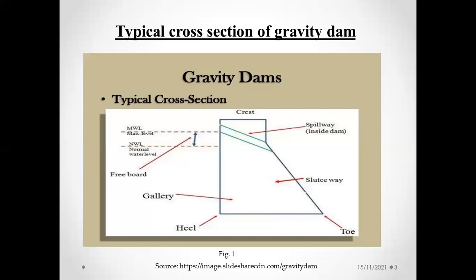There is a term called gallery. The function of the gallery is that sometimes there is seepage from the side of the dam and the foundation. The drainage gallery collects the seepage water and drains it out. There is a pipe connected from the drainage gallery to the foundation. Water seeping from the foundation is collected and drained out through another pipe to the tail side. The main concern is to drain out the water either from the side or from the foundation.